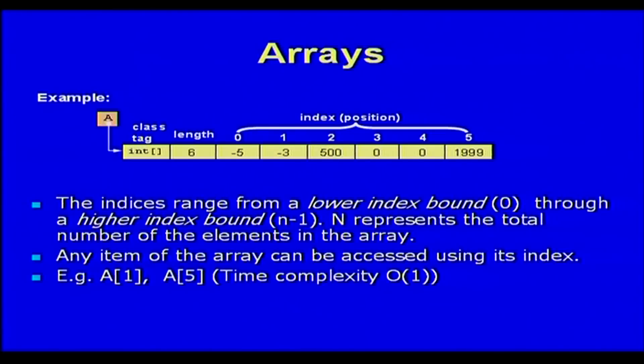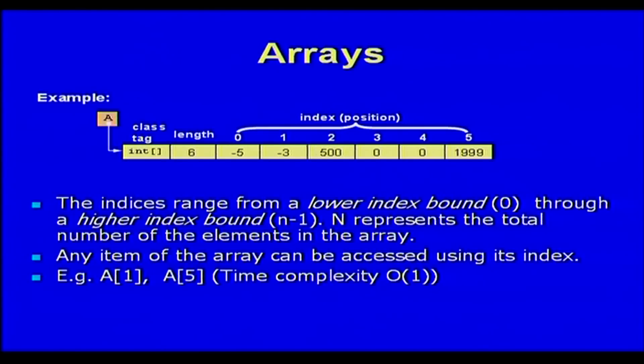Normally, the indices of the array range from a lower bound — normally 0 in most programming languages — through to an upper bound of n minus 1, which means you can represent n elements. Any item of the array can be accessed directly by just giving its index. The time complexity of accessing an element is O(1), which means even if it is a 1000-element array, you can access the 1000th element directly.